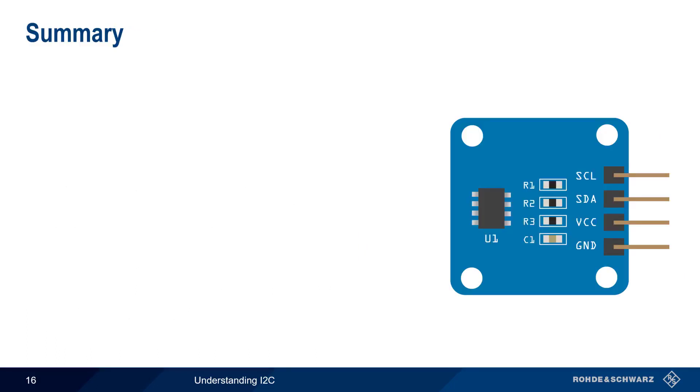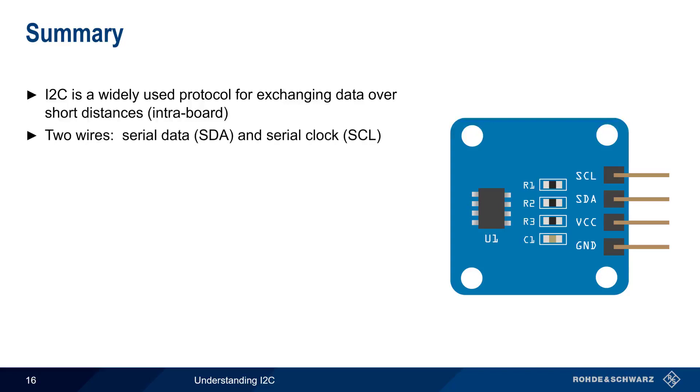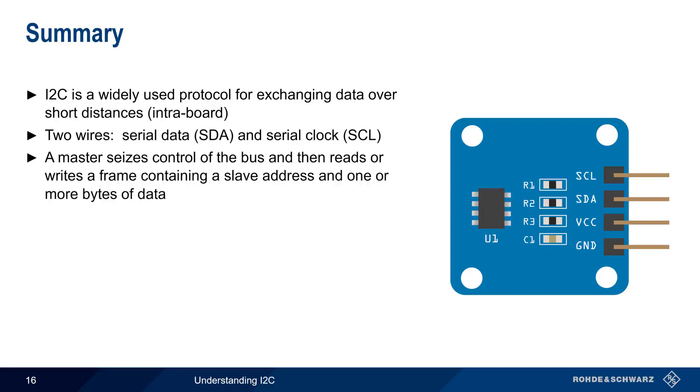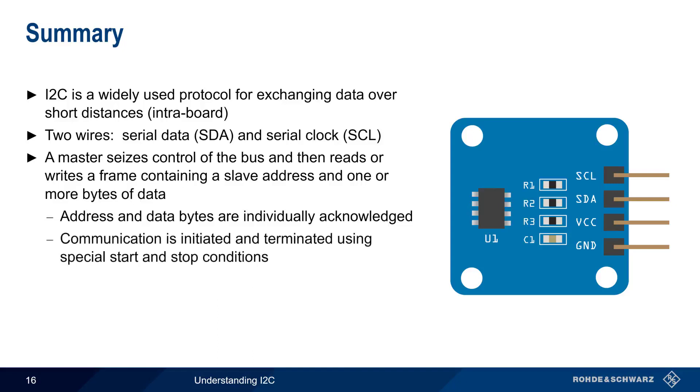Let's end with a brief summary. I2C is widely used for exchanging data over short distances using two wires, serial data and serial clock. In I2C, a master seizes control of a shared bus and then reads or writes data in the form of a frame containing the target slave address and one or more bytes of data. Each of these data bytes is individually acknowledged, and a special start and stop sequence is used to mark the beginning and end of a frame. Pull-up resistors and an open drain are used to create the high I2C idle state. Devices can be categorized by their maximum supported speed, but the practical data rate on an I2C bus is also a function of the pull-up resistors and overall bus capacitance.